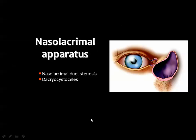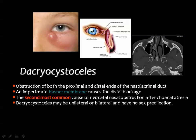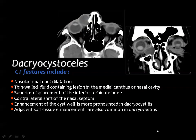Moving to the nasal lacrimal apparatus, we discuss nasal lacrimal duct stenosis and dacryocele. The nasal lacrimal duct may be obstructed proximally, resulting in fluid accumulation that may become secondarily infected forming an abscess. CT scan shows the classic appearance of a dacryocele as a cystic fluid-filled lesion corresponding to the anatomic site of the nasal lacrimal duct, seen on both axial and coronal images.